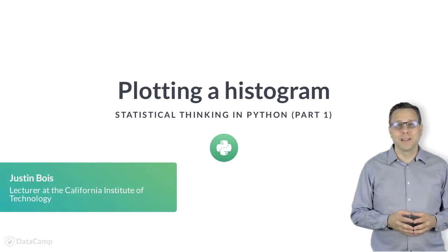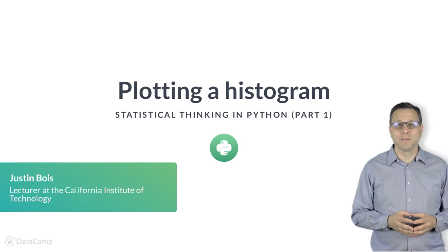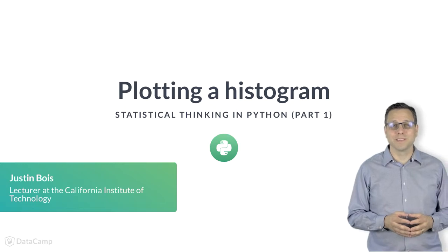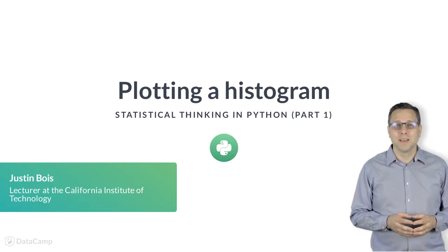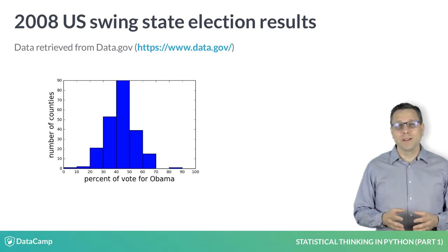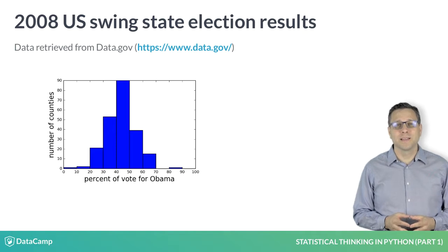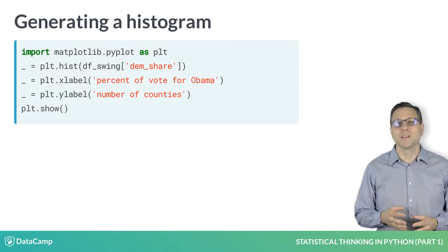We saw in the last video that a histogram can be a useful plot to generate when exploring a data set. Now let's go over how we can create one using Python. We are interested in the fraction of the vote that went to Barack Obama in each county. We can plot this as a histogram using matplotlib.pyplot module's hist function.